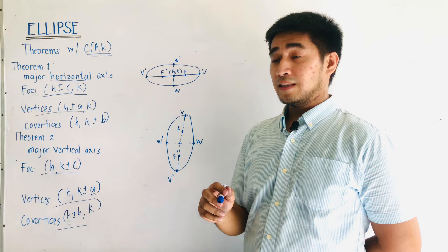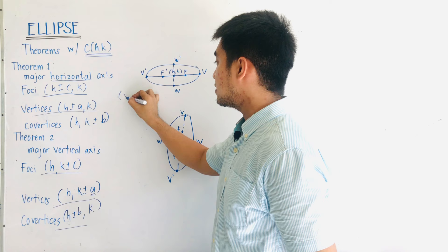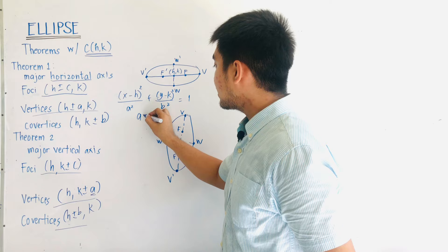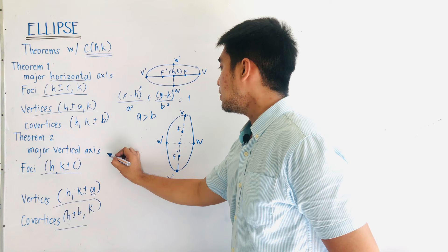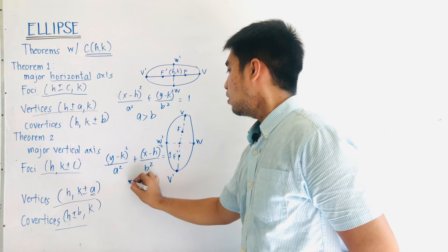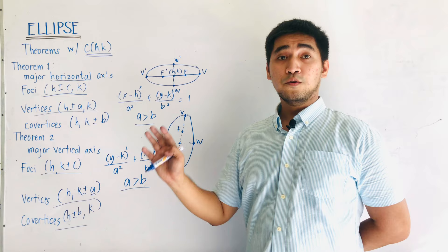So what will be the equation for the major horizontal axis? The equation is: (x − h)² / a² + (y − k)² / b² = 1, where a is greater than b. For the major vertical axis, we have: (y − k)² / a² + (x − h)² / b² = 1, also where a is greater than b. This is the standard equation of an ellipse with center located at (h, k).